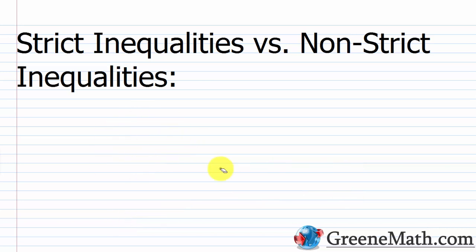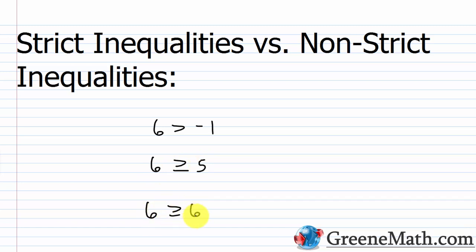You also have a greater than or equal to. For example, 6 is greater than or equal to 5 — is 6 greater than 5? Yes, so you stop there, it's true. For 6 is greater than or equal to 6: is 6 greater than 6? No. Is 6 equal to 6? Yes. So this is also a true statement. When you have a non-strict inequality like less than or equal to, or greater than or equal to, you're allowing for the possibility of equality.